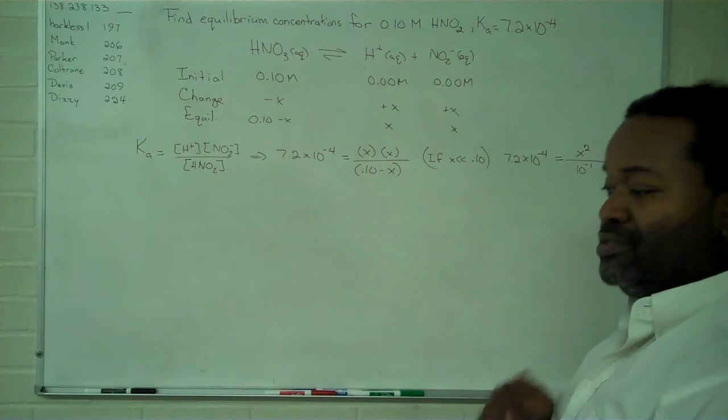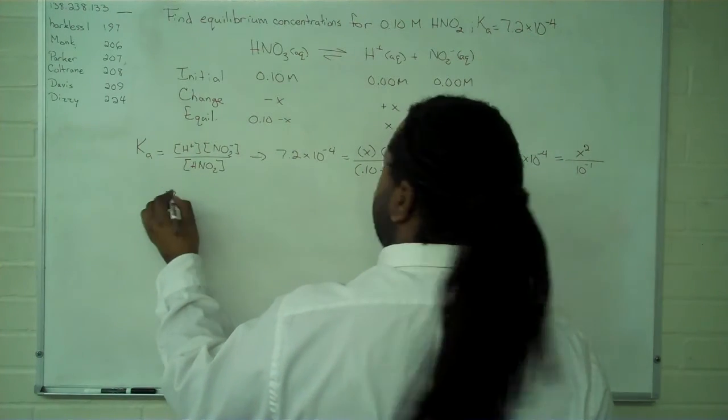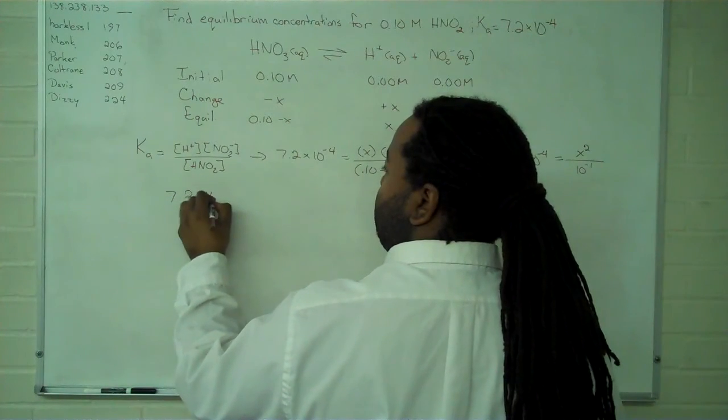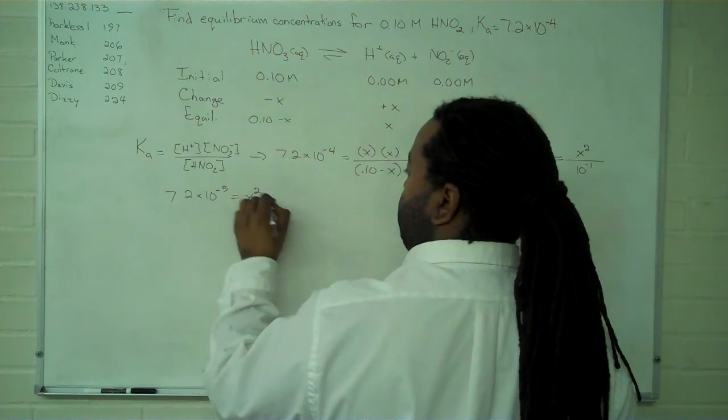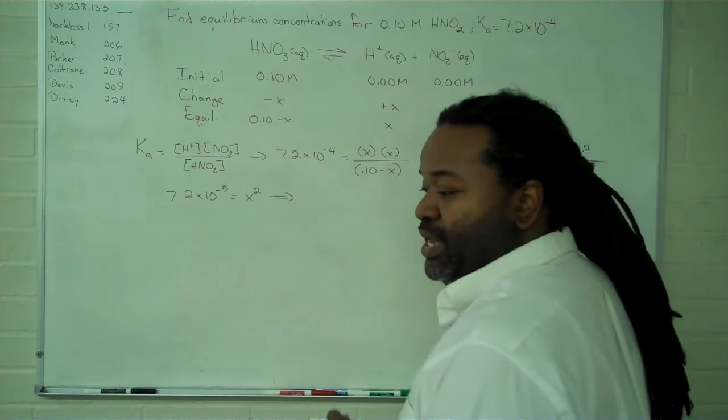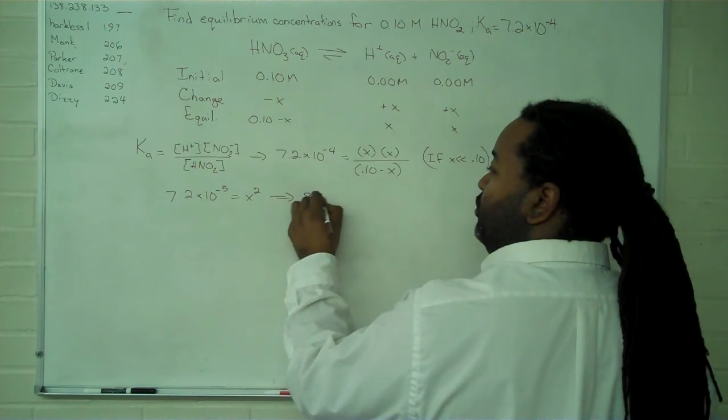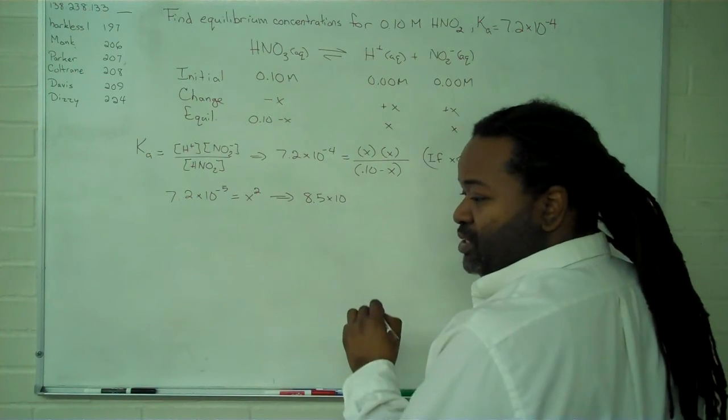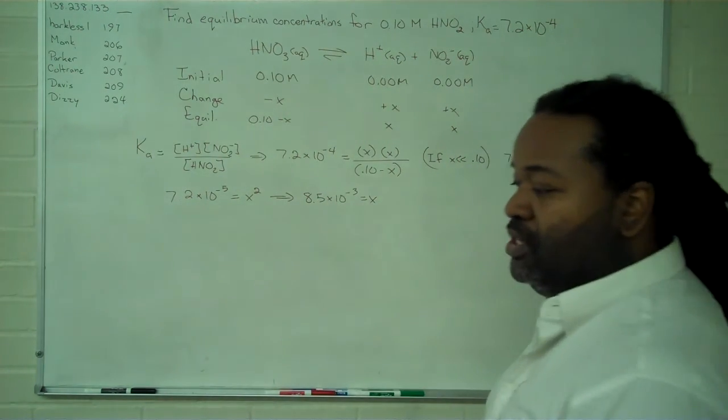So now we just have to solve for x. This simplifies things greatly. We have 7.2 times 10 to the minus 5 equals x squared. And taking the square root, we find a value of 8.5 times 10 to the minus 3 equals x.